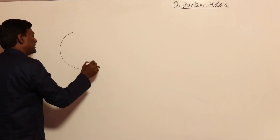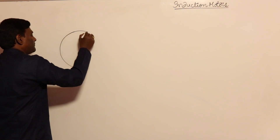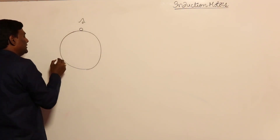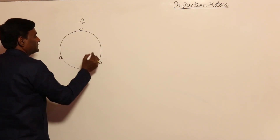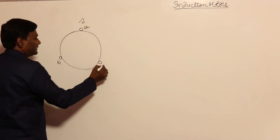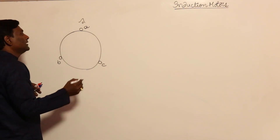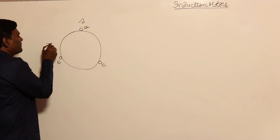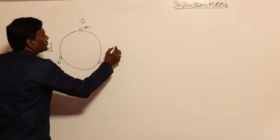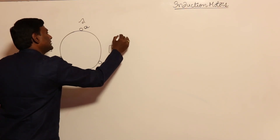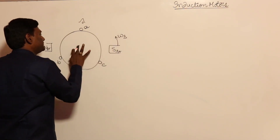As usual, from the stator side, what is required is only a rotating magnetic field. This is going to be A, B, C. Because of this, we are going to have two poles which will be rotating at synchronous speed.